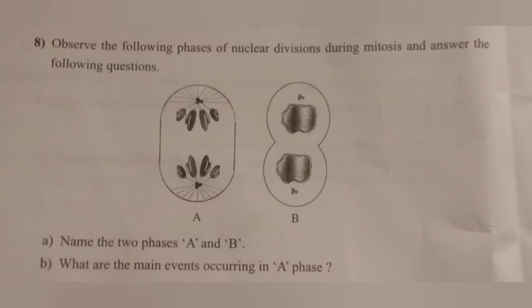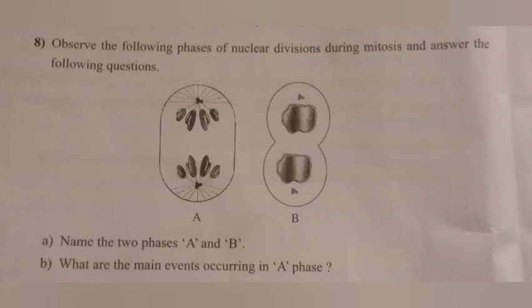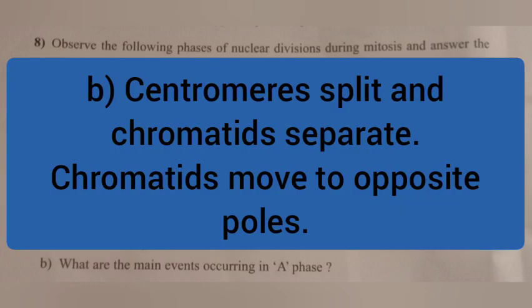Question 8. Observe the following phases of nuclear divisions during mitosis and answer the questions. A. Name the two phases A and B. Answer: A — Anaphase; B — Telophase. B. What are the main events occurring in phase A? Answer: Anaphase — centromere splits and chromatids separate; chromatids move to opposite poles.